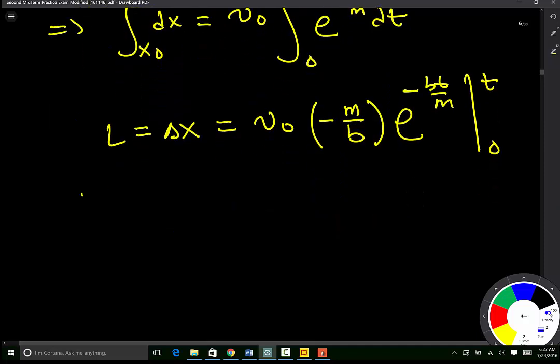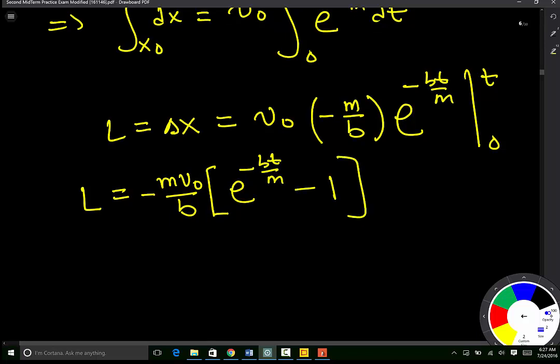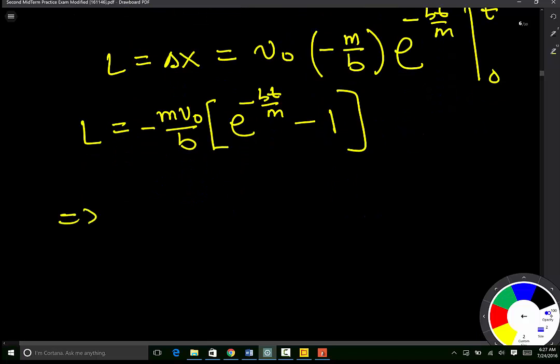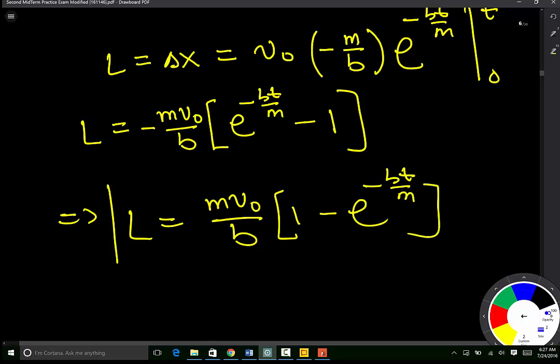If we simplify, L will be equal to Mv0 over B times the bracket, e negative Bt over M minus 1. Which means that L is equal to Mv0 over B times 1 minus e negative Bt over M.